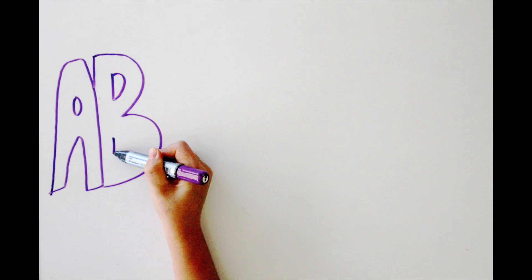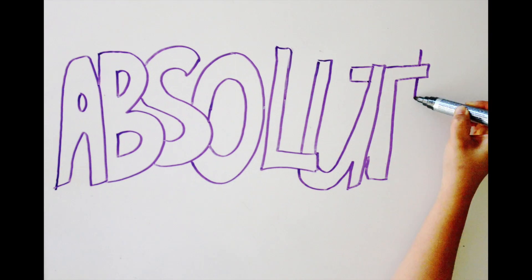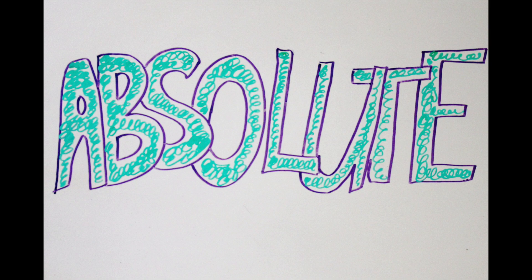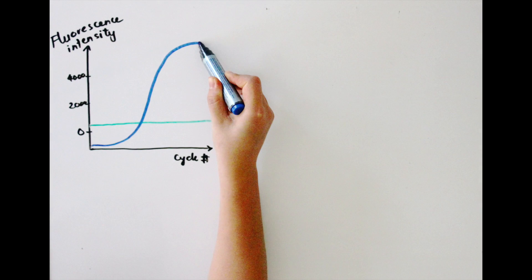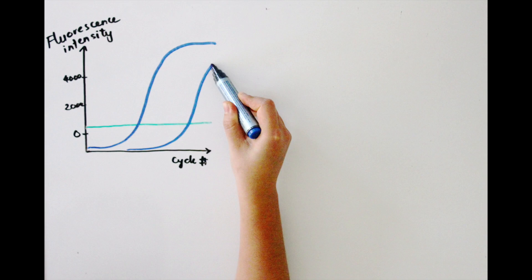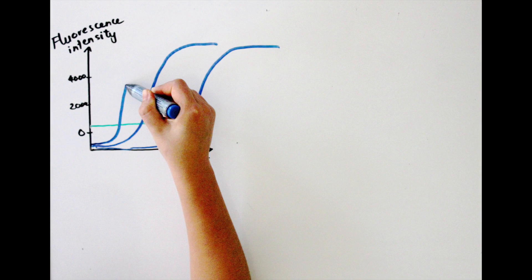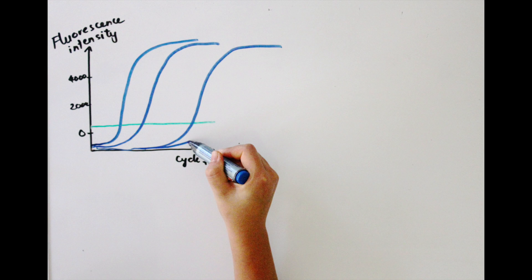The absolute standard curve method determines regional DNA concentration by comparing the CT value of the sample of interest with the standard curve. To create the standard curve, you need to make DNA samples of known concentrations. After doing qPCR on these, you will see different PCR plots for each standard.